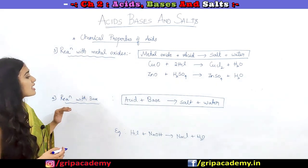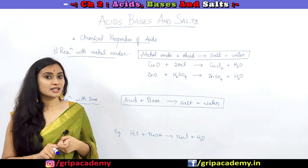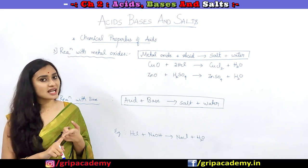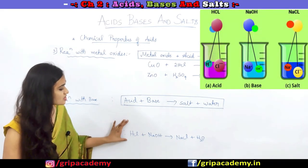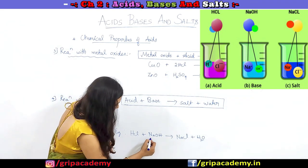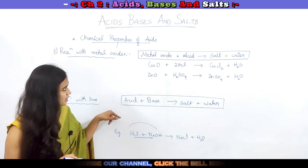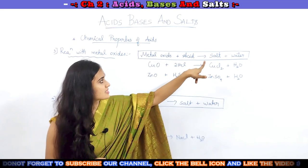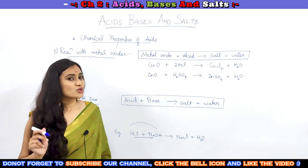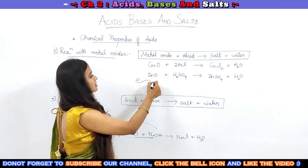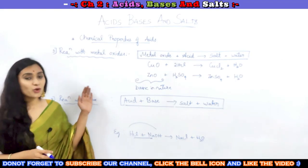There is another property: what happens when acid reacts with bases. As I told you in the introduction, acids and bases are chemically opposite in nature and they neutralize each other. When acid reacts with a base, they produce salt and water. For example, when HCl is reacted with NaOH, NaCl (which is salt) is produced along with the formation of water. Since even metal oxide reacting with acid and base reacting with acid give the same products (salt and water), we can conclude that all metal oxides are basic in nature.